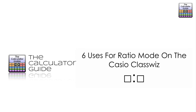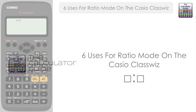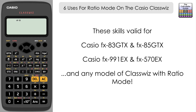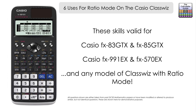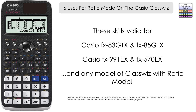Hello and welcome to the Calculator Guide video on six uses for ratio mode on the Casio ClassWiz. I'm going to be showing you these on the Casio fx-85GTX model, which is suitable for GCSE mathematics. It's also valid if you have the Casio fx-991EX or fx-570EX models, or indeed any model of ClassWiz which has a ratio mode.